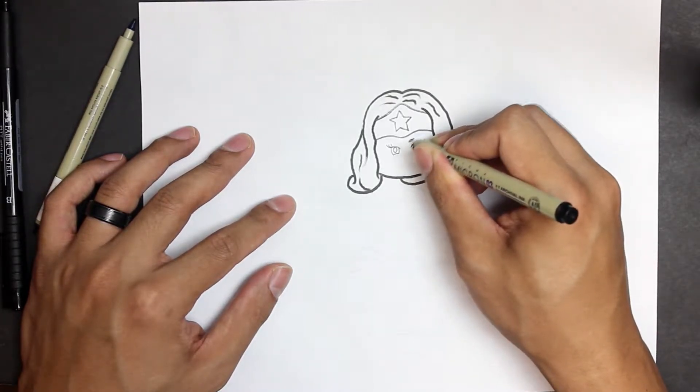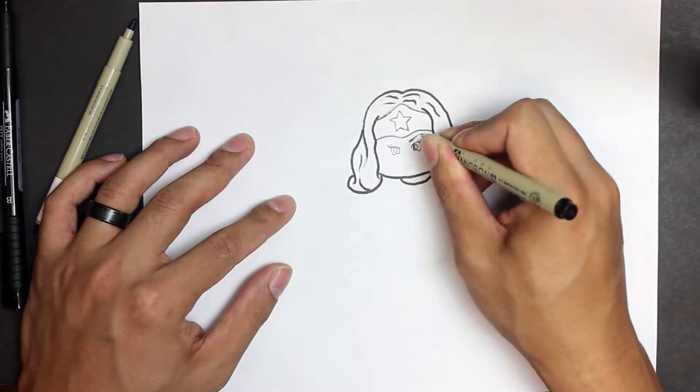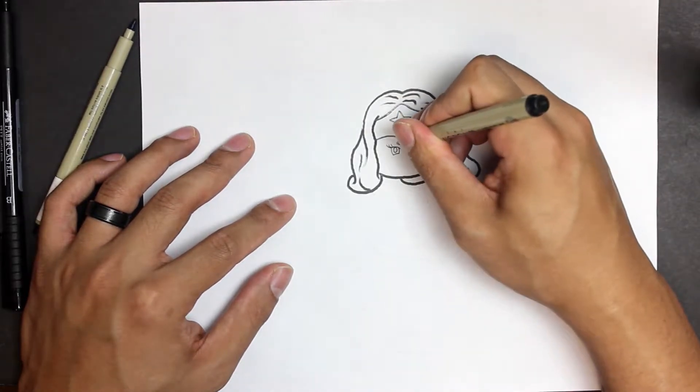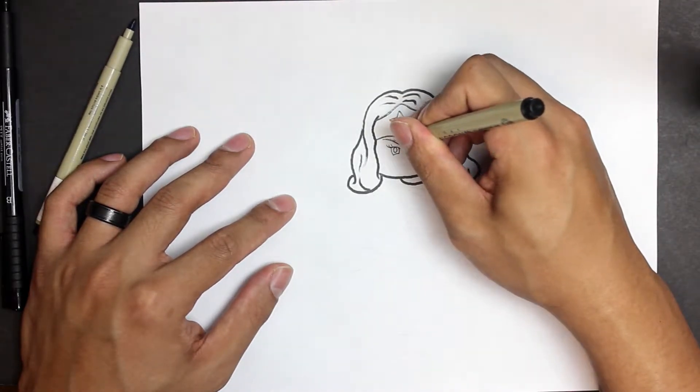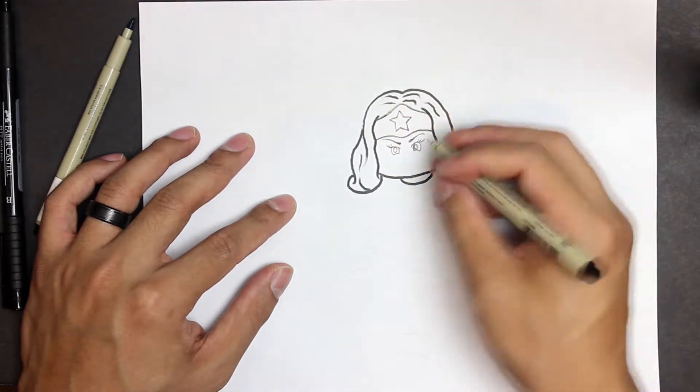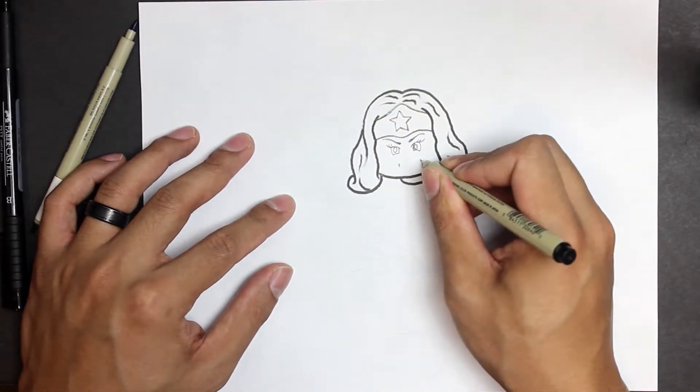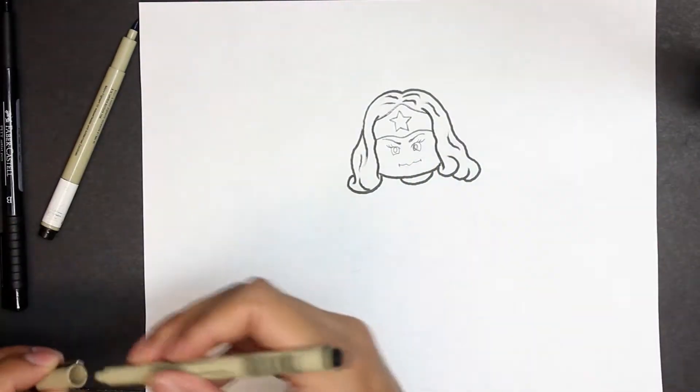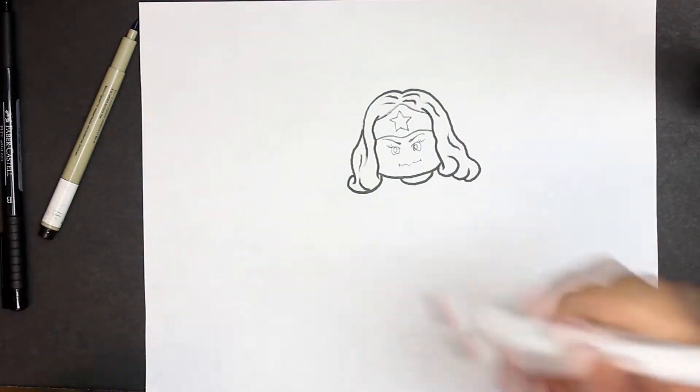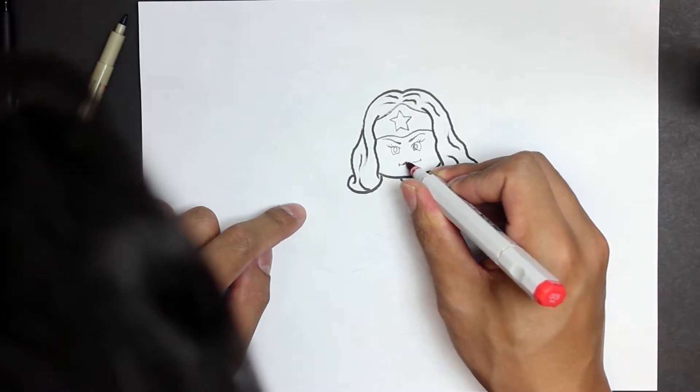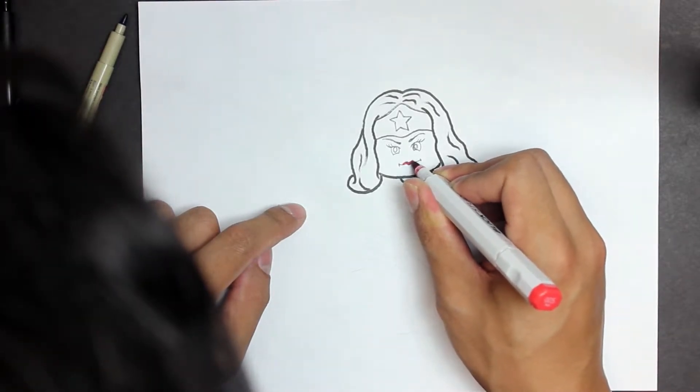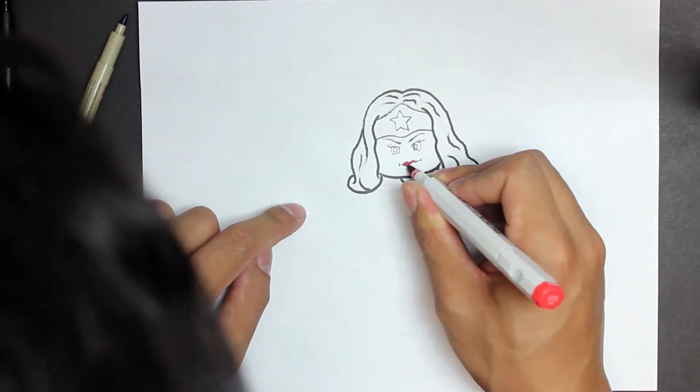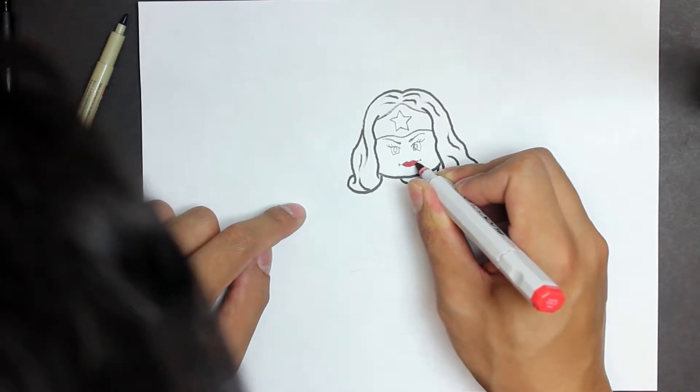Once I do that, I can add a little bit of a thin eyebrow on each side. For guys, it doesn't really need to be as detailed, but for girls, you need to make sure you do the face correct. I'm going to use a little bit of a red marker just for the lipstick to emphasize the character.